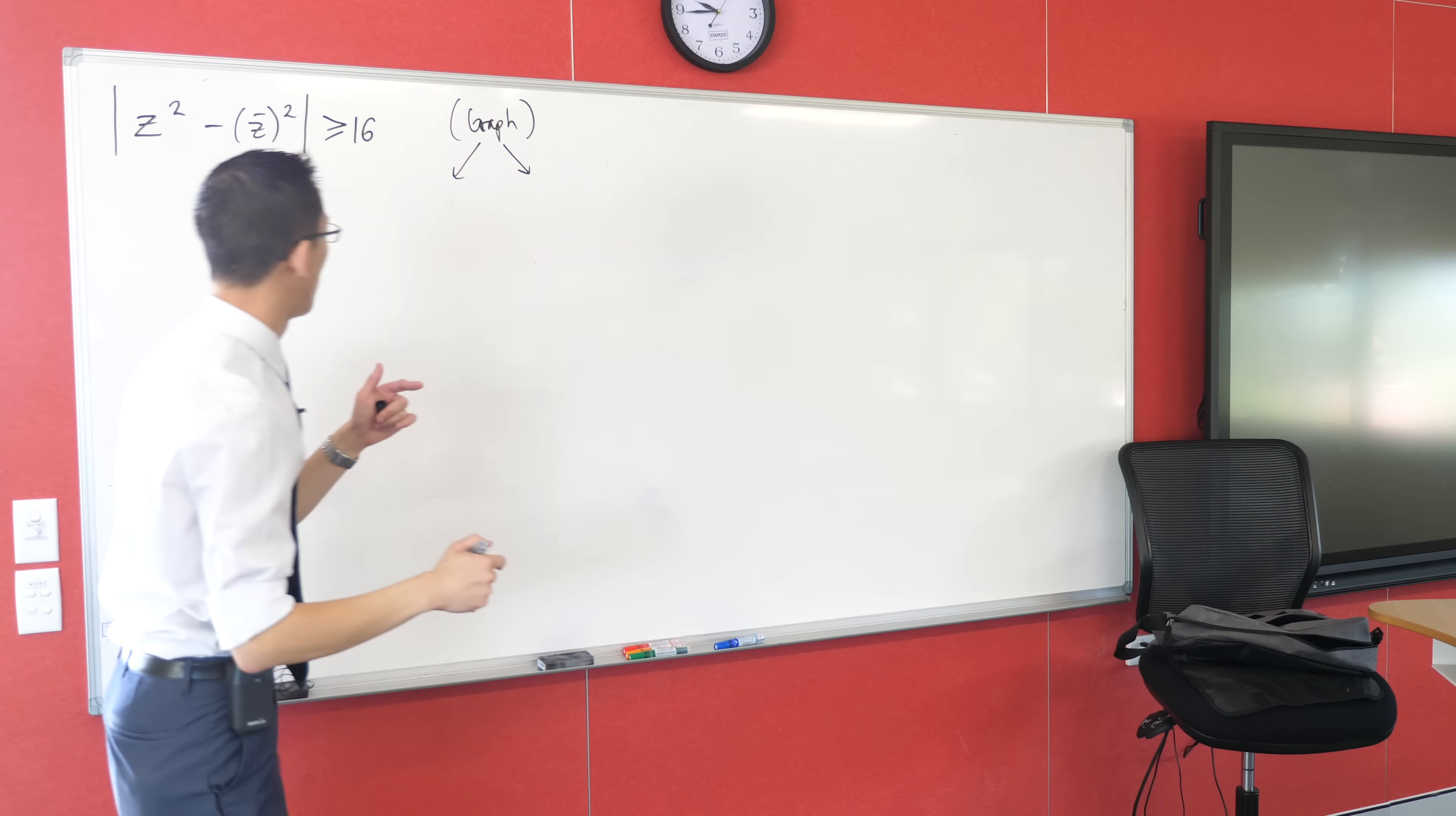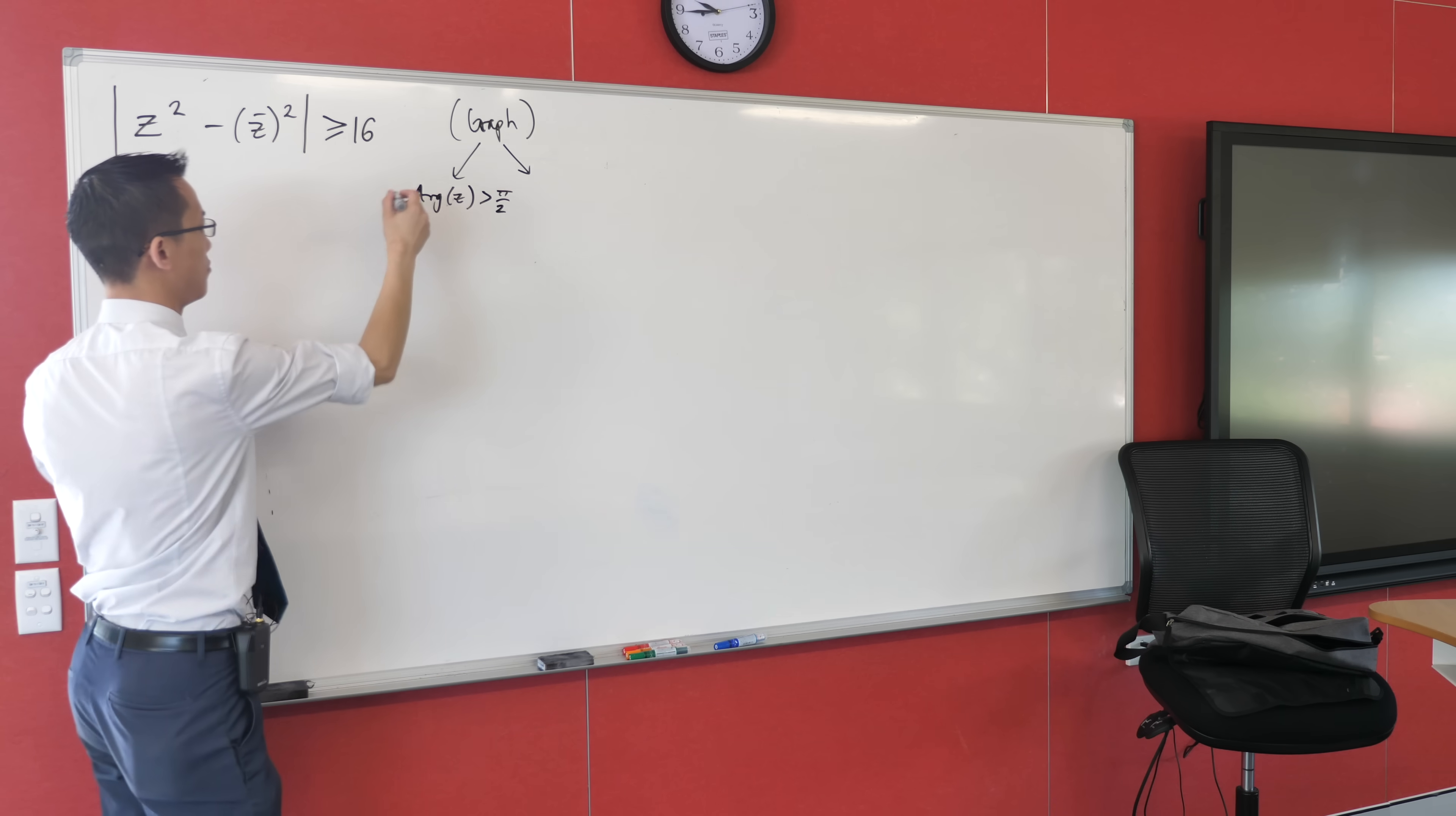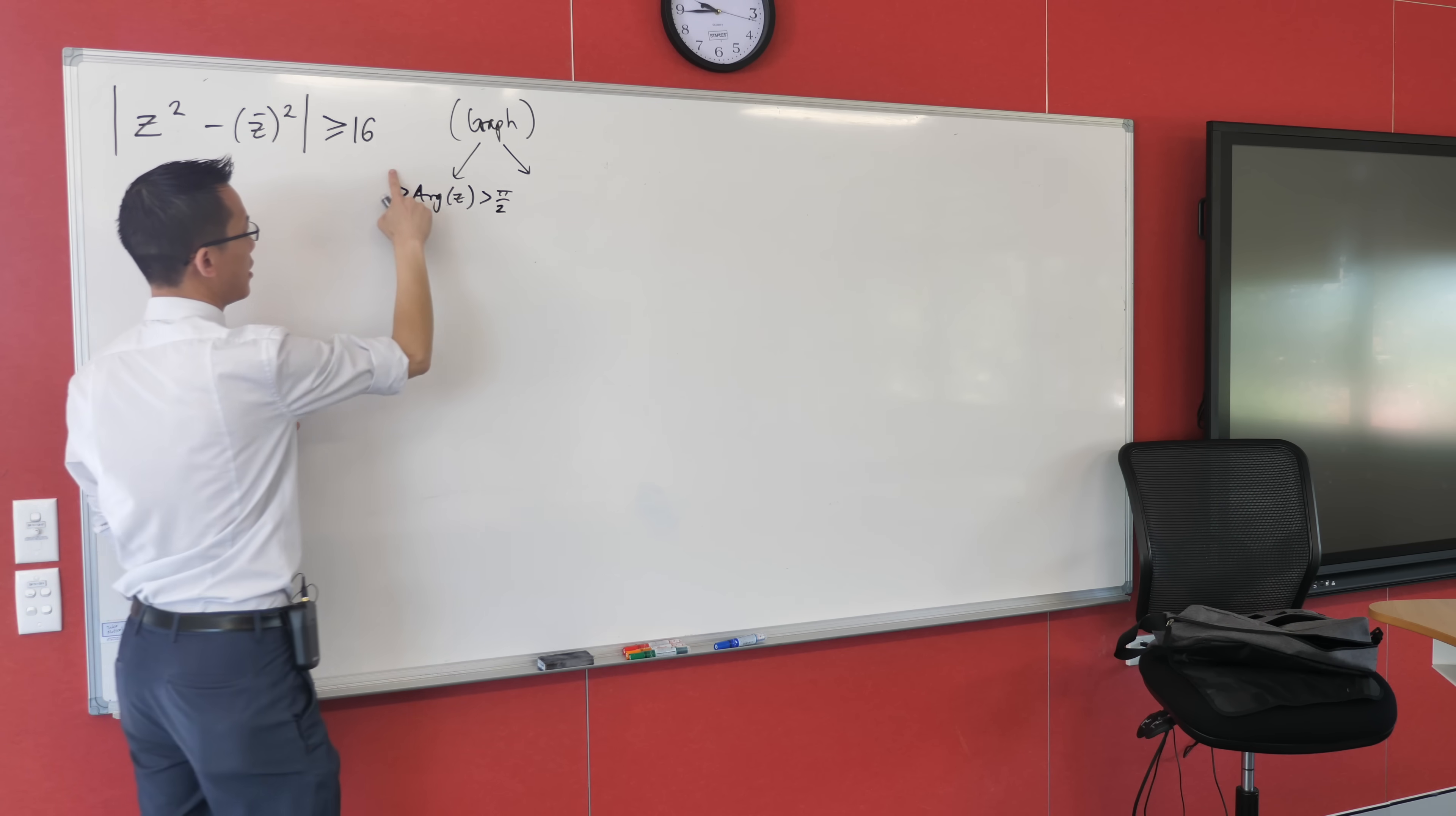You know those ones where you see something like arg z is greater than π/2, and between π/4, right? So you've got some complex number, and when you measure its primary argument from our positive real axis...